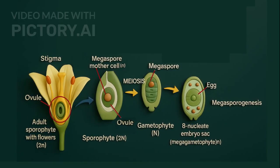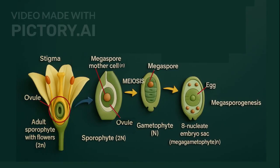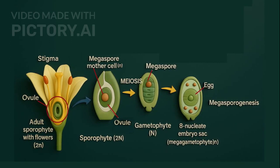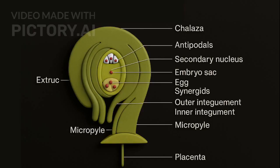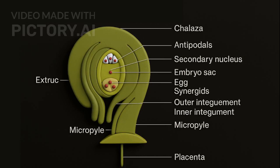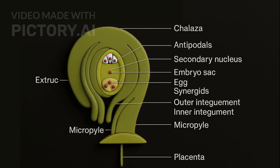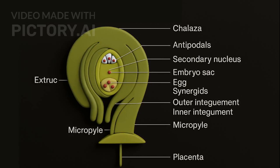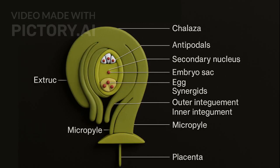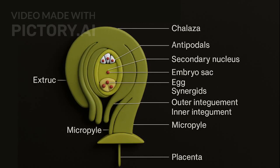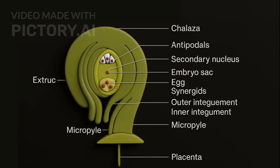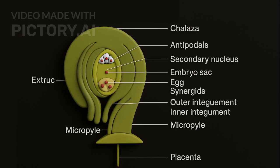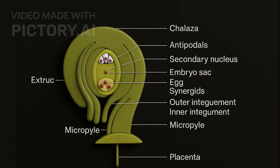Megasporogenesis: In the ovule, a megaspore mother cell (MMC) undergoes meiosis to form four megaspores. One surviving megaspore undergoes three mitotic divisions, forming eight nuclei arranged as: three antipodal cells at the chalazal end; two synergids plus one egg cell at the micropylar end; and two polar nuclei in the center, which fuse to form a diploid secondary nucleus.